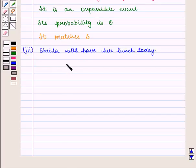She will not have lunch only if she has some urgent work. Otherwise, it is quite certain that she will have lunch. So we can say it is a likely event and its probability will be near to 1.